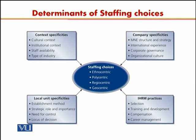In this diagram, you can see that there are four sets of determinants of staffing choices. At the center, you can see the staffing choices listed as ethnocentric, polycentric, regiocentric, and geocentric approaches. There are four types of variables affecting these staffing choices. The first, in the left-hand corner, is context specificities — what is the context in which the firm is operating? And within that, there are again four classifications of this context.